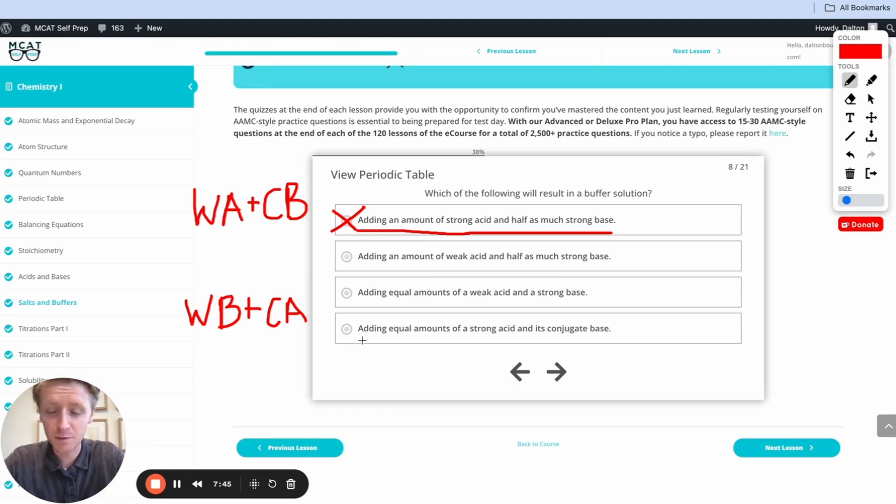In fact, I can see a similar problem down here. Again, we're working with a strong acid and its conjugate base as opposed to a weak acid and its conjugate base. So we're going to go ahead and cross these off because we know that we need a weak acid in this buffer solution.